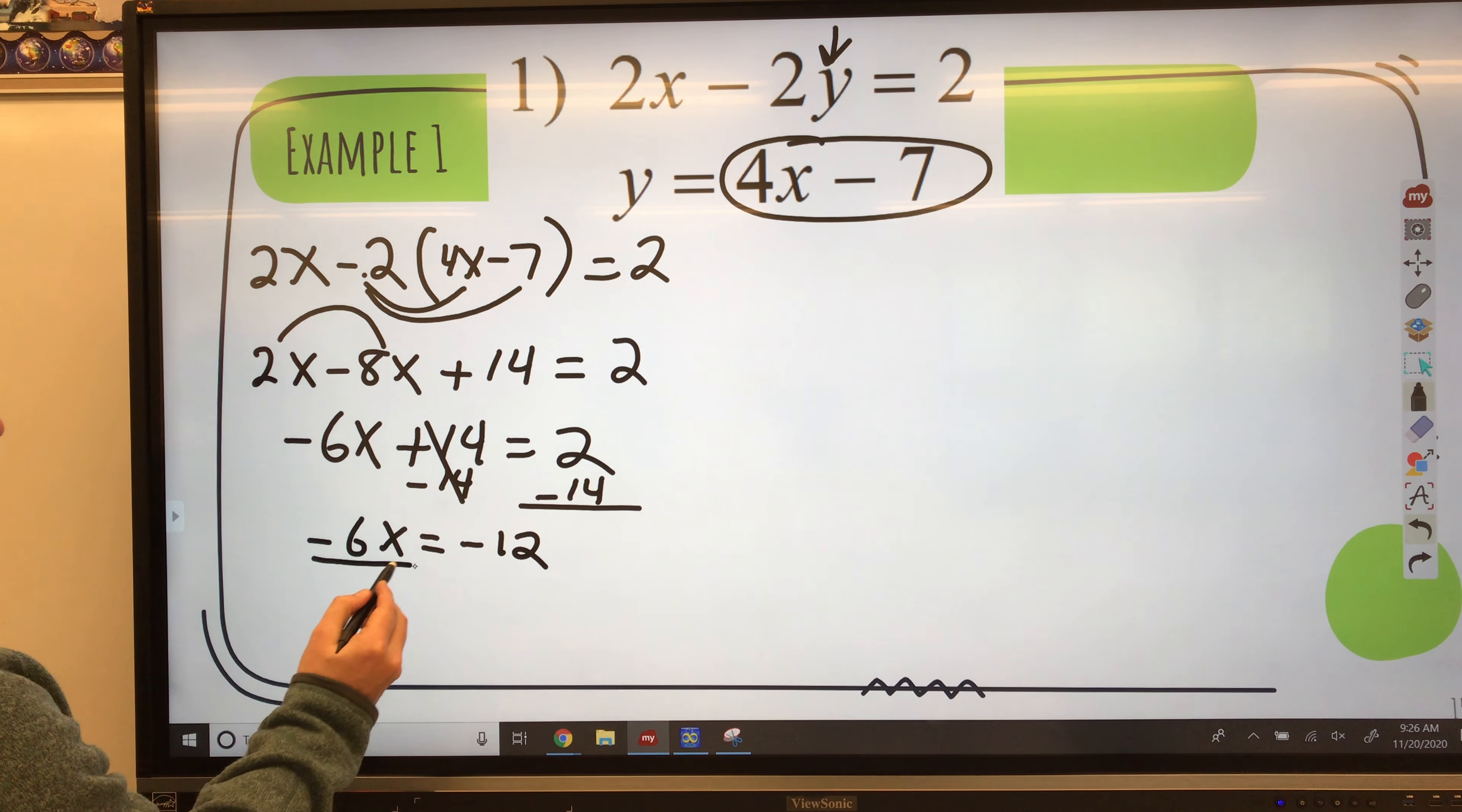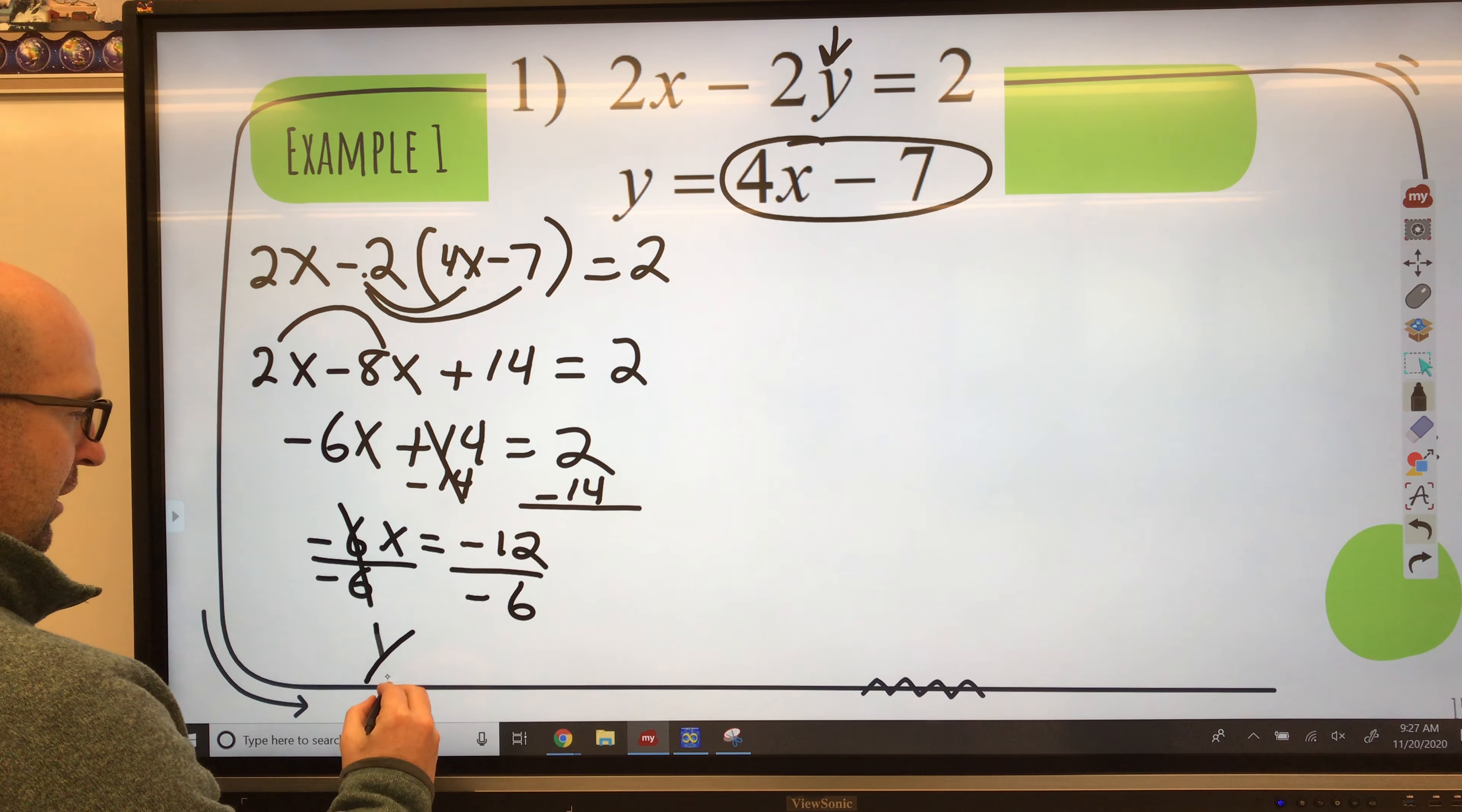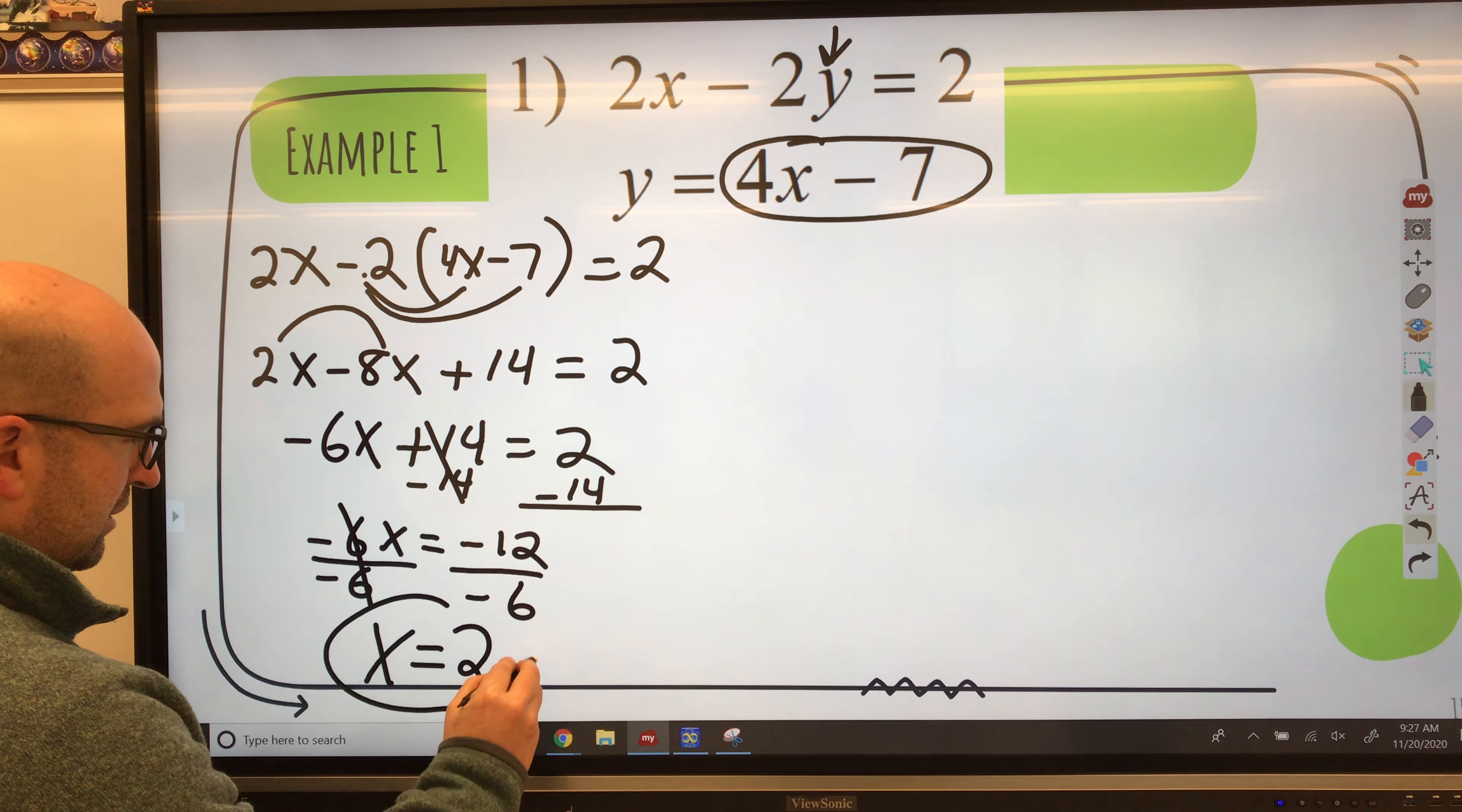I need to divide by the coefficient in front of the x to get x all by itself. Again, balance the equation. And I get x equals negative 12 divided by negative 6 is a positive 2.